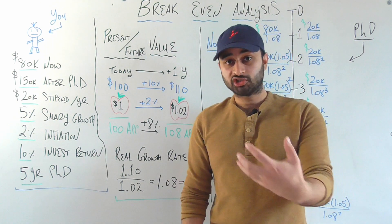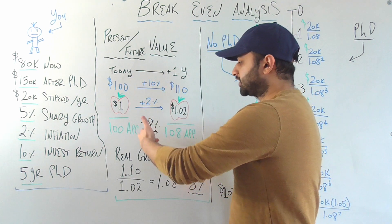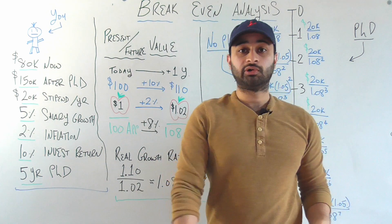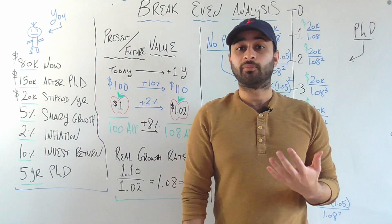And so we see that in terms of your purchasing power, your money has not grown by 10%. It has actually grown by 8% because before you were able to buy 100 apples. And now you can buy 8% more apples, you can buy 108 apples.